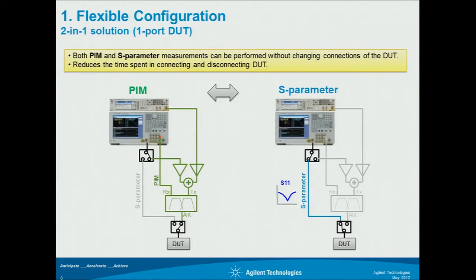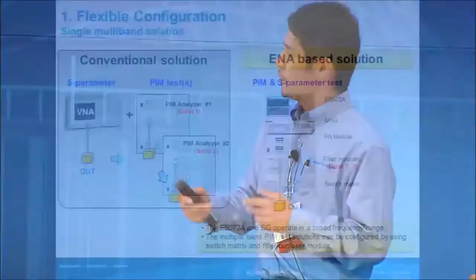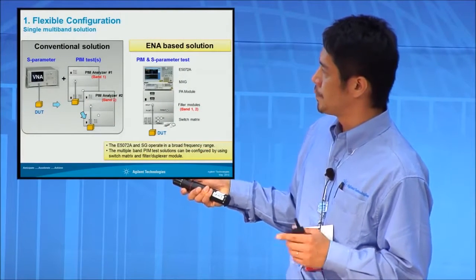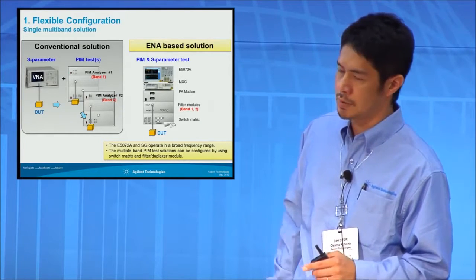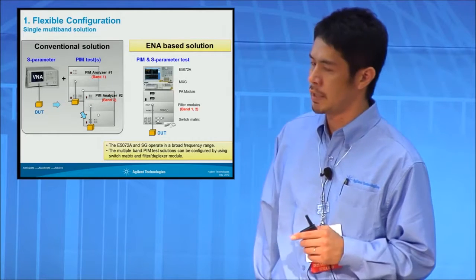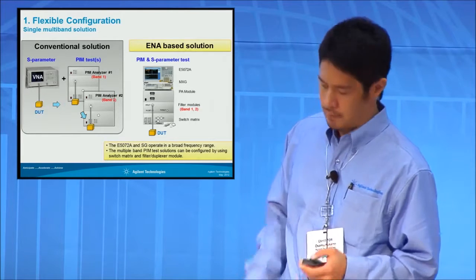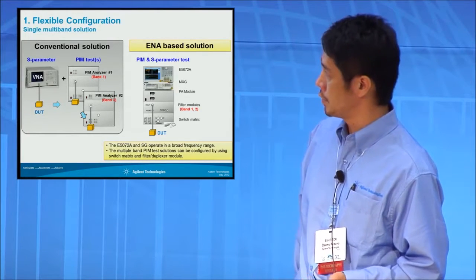Flexible configuration: because we use a network analyzer to measure PIM, by using a switch we can also measure S-parameters with the same configuration. With the conventional solution, we have to have a different analyzer for each frequency band. But by using this new system, we can have a multiple-frequency system in one solution, plus S-parameter measurement — so it is a more flexible configuration.